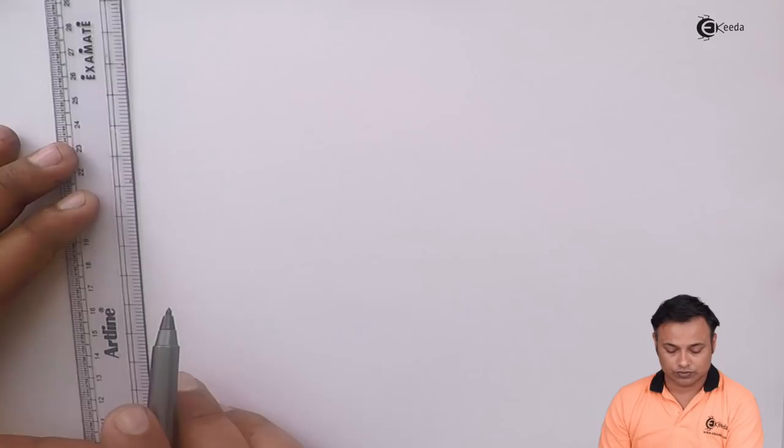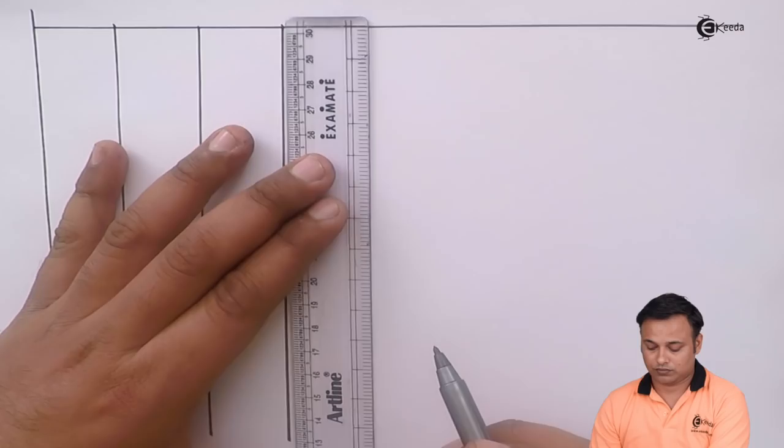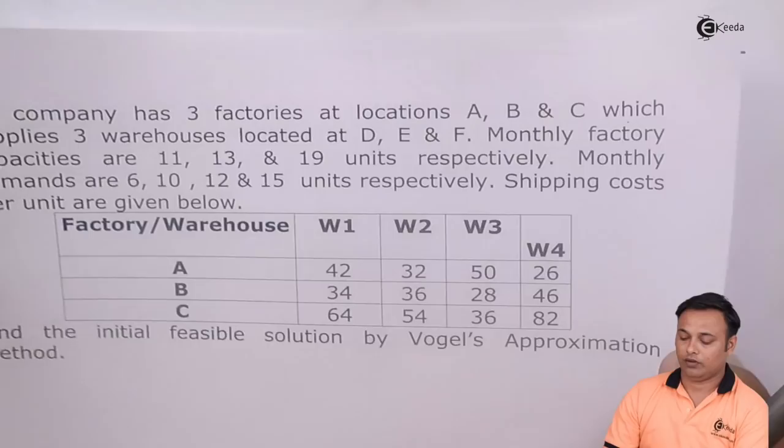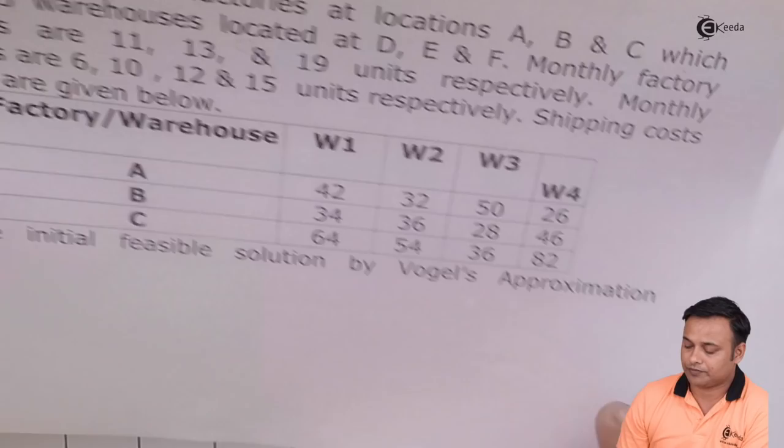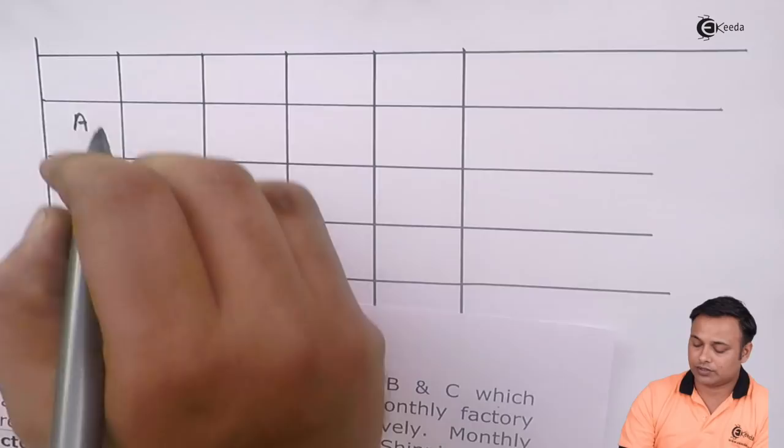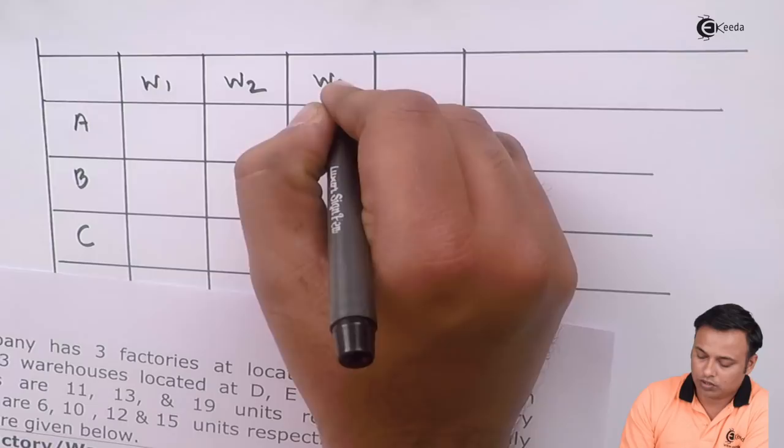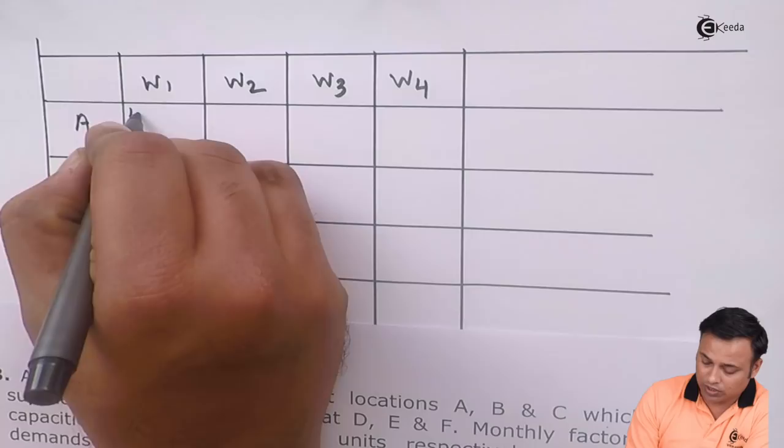Let's first draw the diagram and try to work out the solution. So here we will just note down the problem first. Here are my factories A, B, and C, and here are my warehouses W1, W2, W3, and W4. I'll just note down the cost on the top left side of each cell.